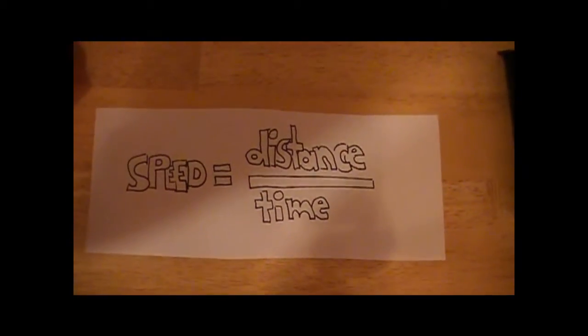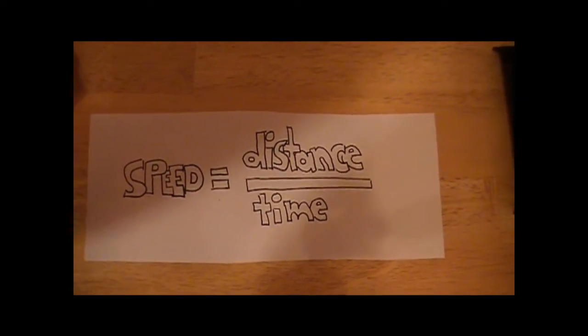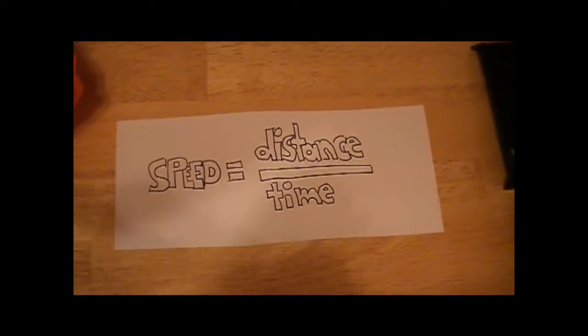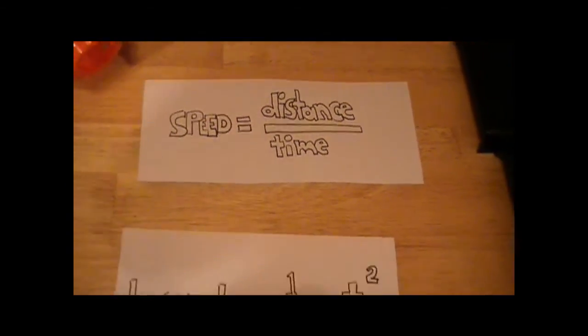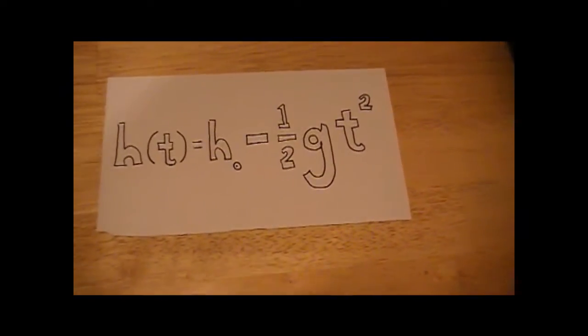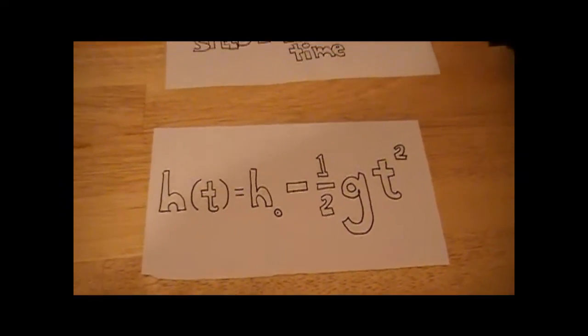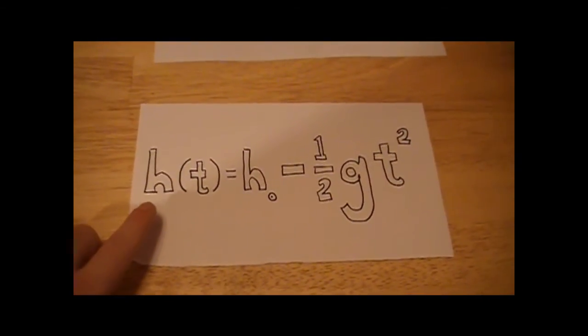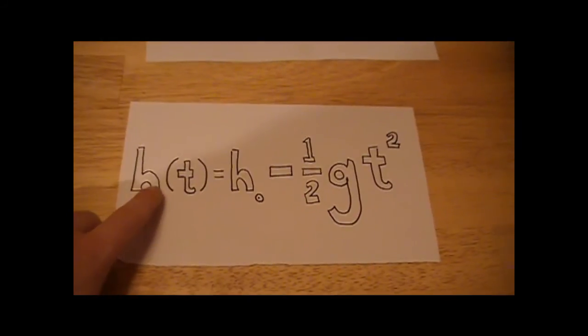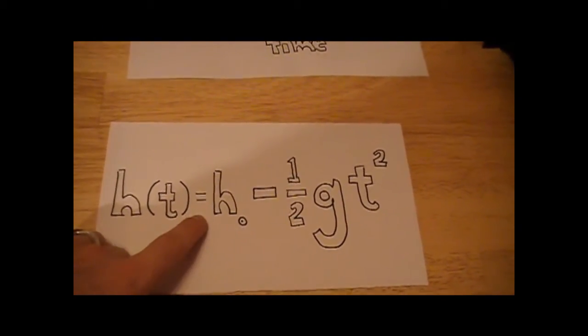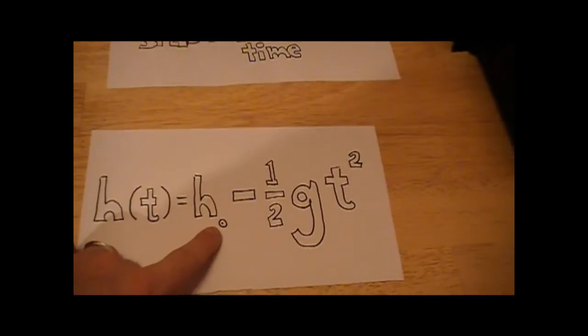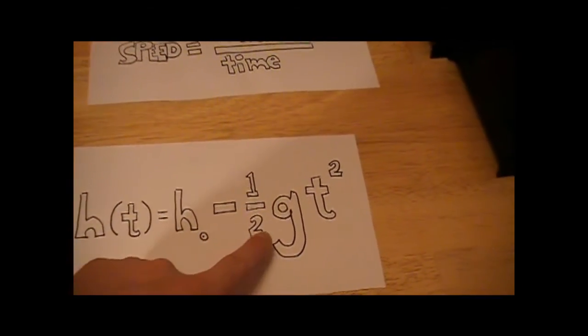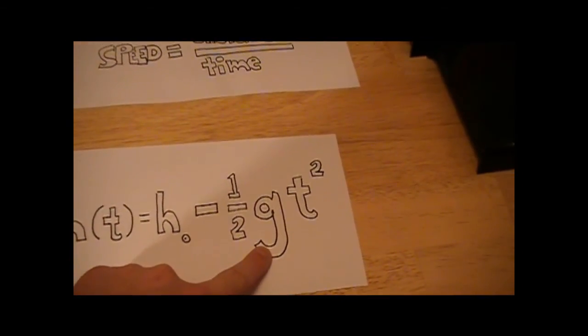First of all this is kind of common sense. Speed is distance divided by time, you know like miles per hour or feet per second. Now this one most people don't know off the top of their head but we'll come back to it. What does it mean? It means the height of an object at a certain time equals its original height minus the pull of gravity.